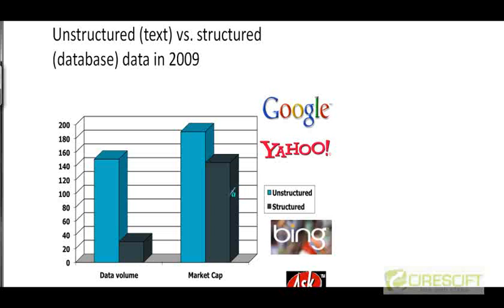But 13 or 14 years later, the scenario is quite different. The amount of unstructured data has grown even more relative to structured data. But this time, if you look at the market cap of companies processing unstructured data — companies like Google, Yahoo, Microsoft, Ask, and so on — you can see that a huge amount of money is being made by processing unstructured data. This indicates the growing importance of the field of information retrieval in the industry over the last 10 to 15 years.